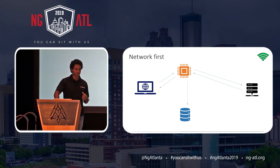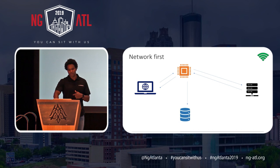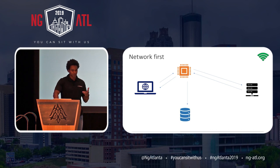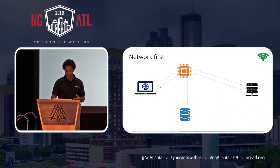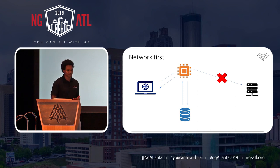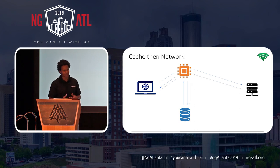With network first, our service worker — shown in orange — intercepts the fetch request and goes out to the web server. When the web server is ready it sends the response back, and the service worker decides how to handle it. In network first, you update both your cache and your application. But what if we don't have an internet connection? We make a request through our service worker, it goes to the web server, but we don't get a response. So we go to the cache instead, look for the content there, and return it to the web app — we still have content to load, but it may not be the freshest.